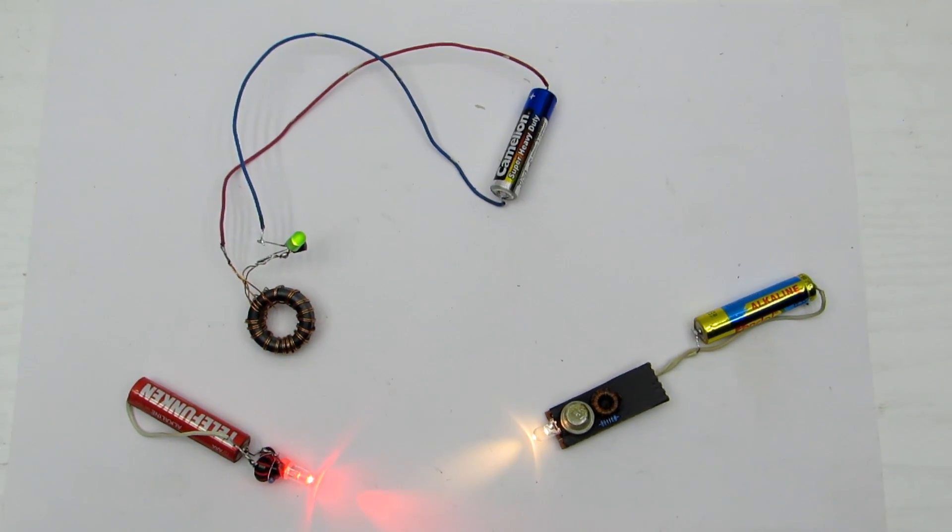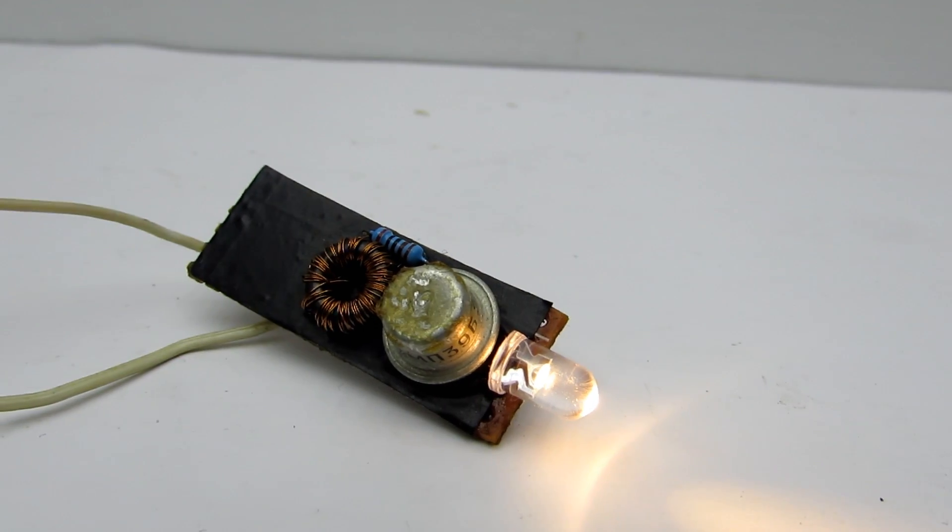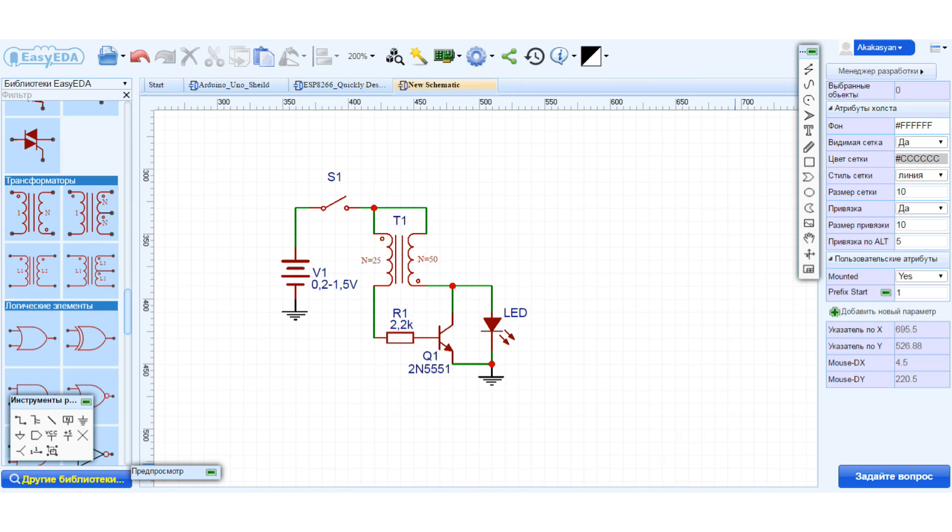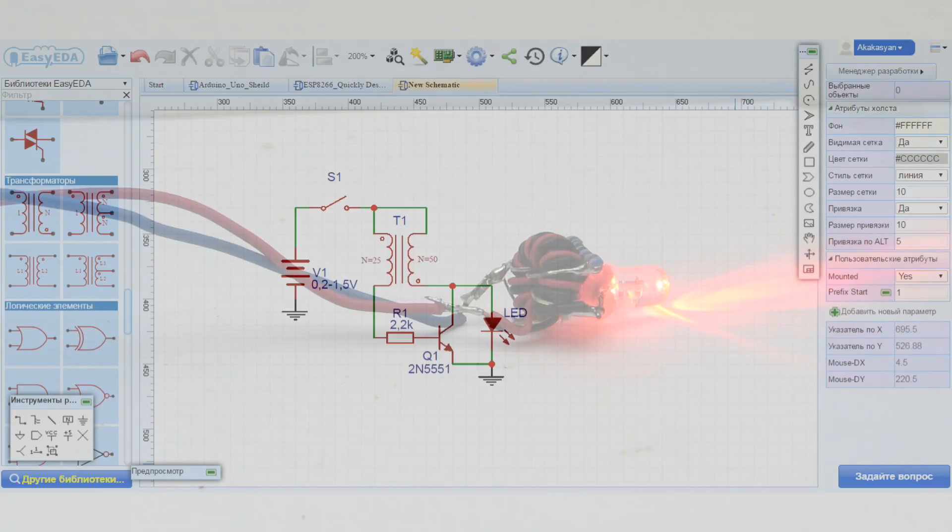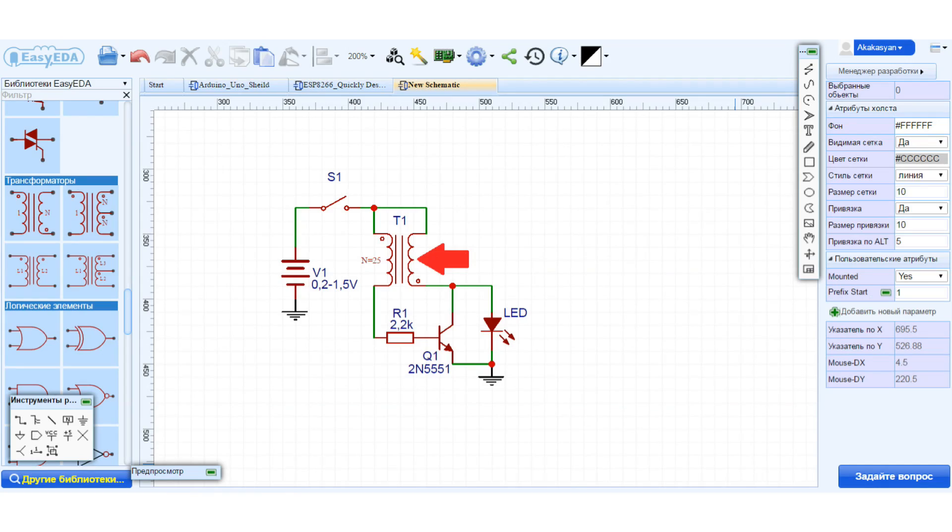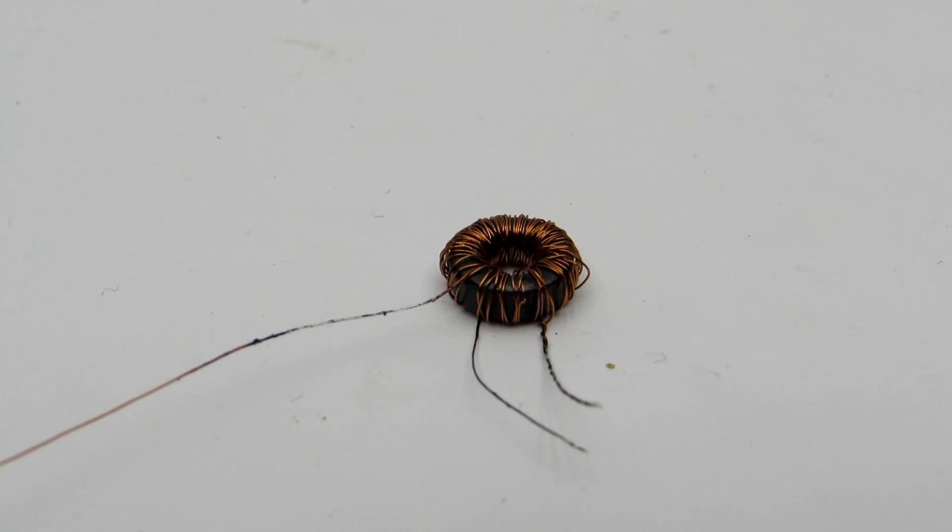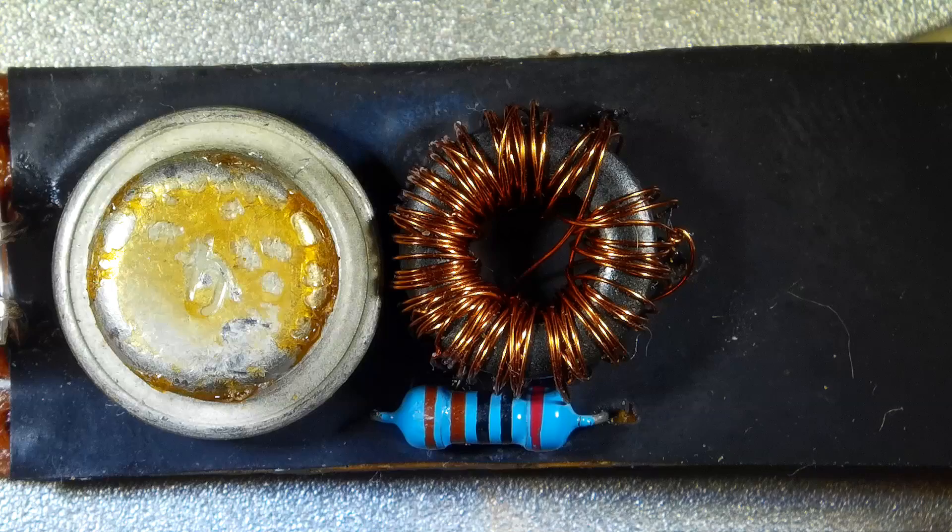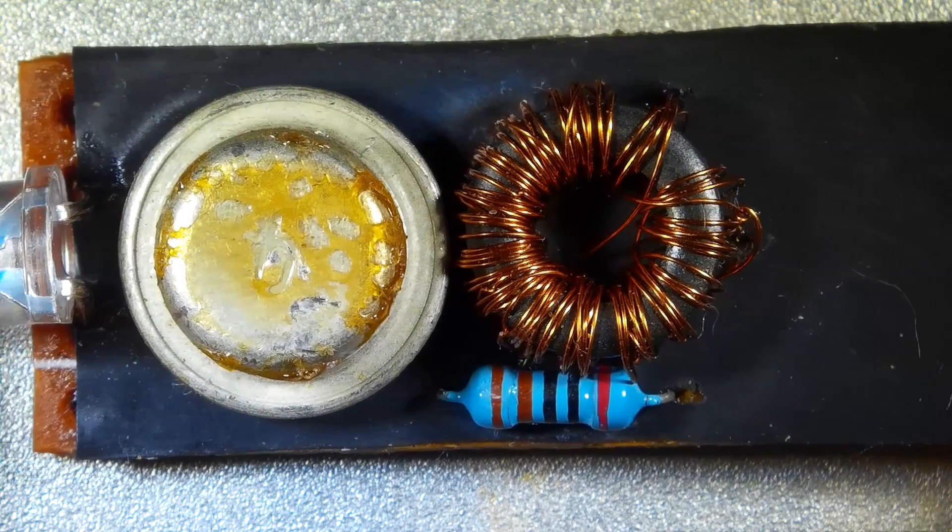In essence, it is a simple auto-generating converter, where LEDs glow due to self-induction in the collector coil. The scheme includes only a few details: transformer, transistor, resistor, and LED itself.